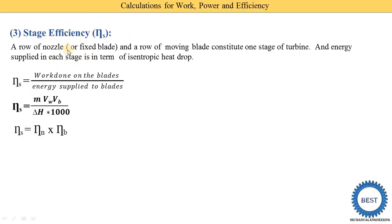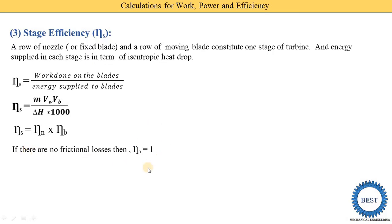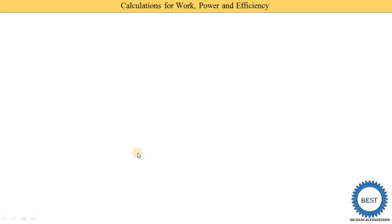Stage efficiency can also be written as nozzle efficiency times blade efficiency, since a stage is a combination of nozzles and moving blades. If we know the nozzle efficiency and blade efficiency, we can find the stage efficiency by multiplying them. If there are no friction losses, nozzle efficiency equals one, and in that case stage efficiency equals blade efficiency.